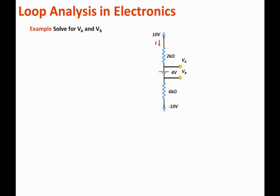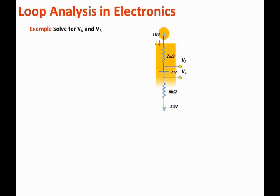We will use the loop equation to state that the voltage at the top will equal the sum of the voltage drops throughout the loop plus the voltage at the bottom. Keep in mind that you are going to add the voltage at the bottom.